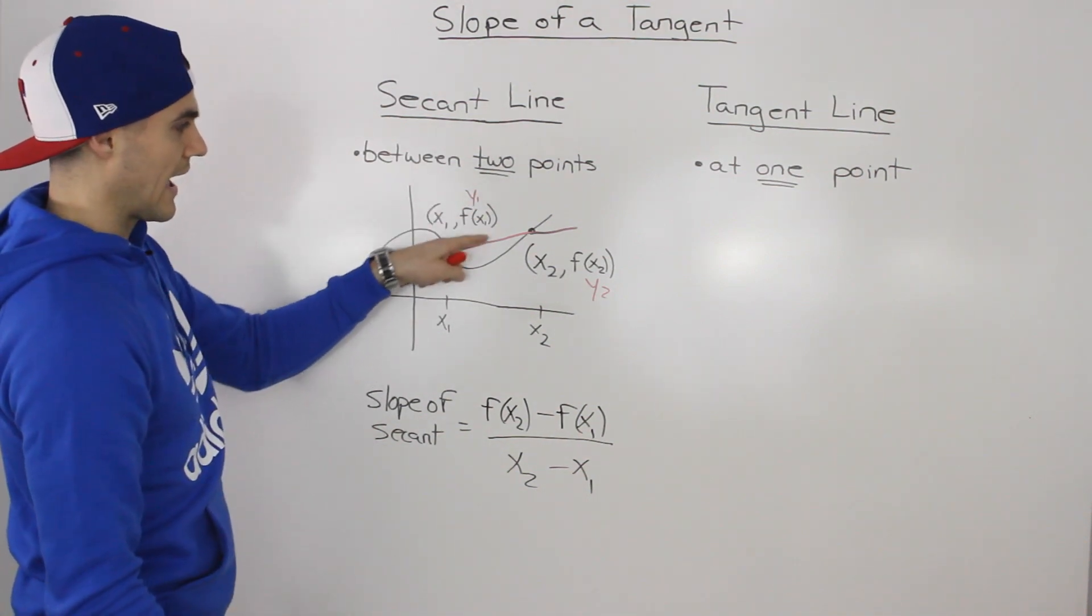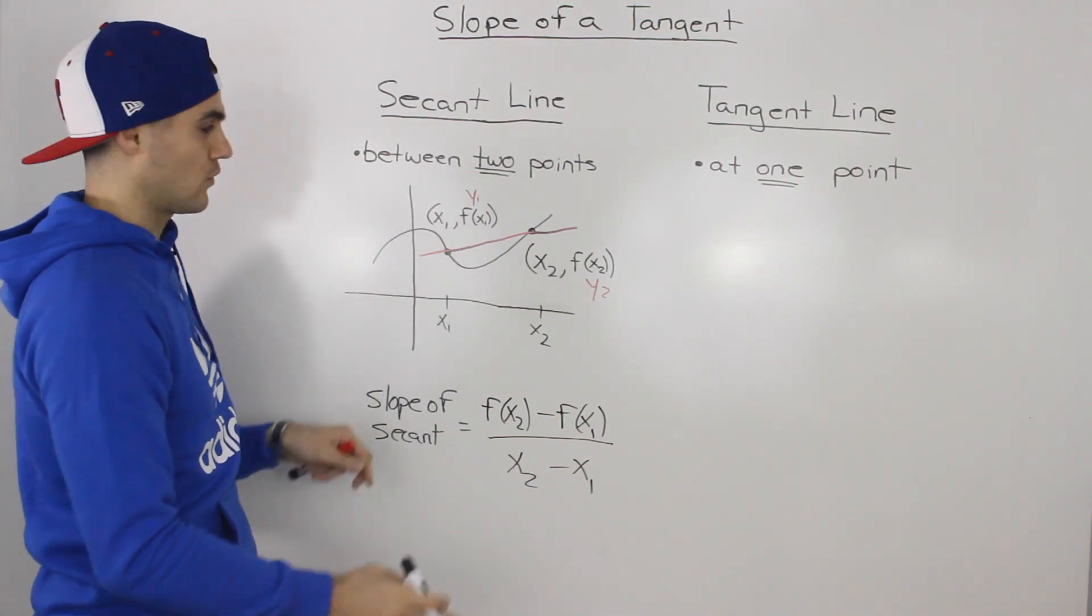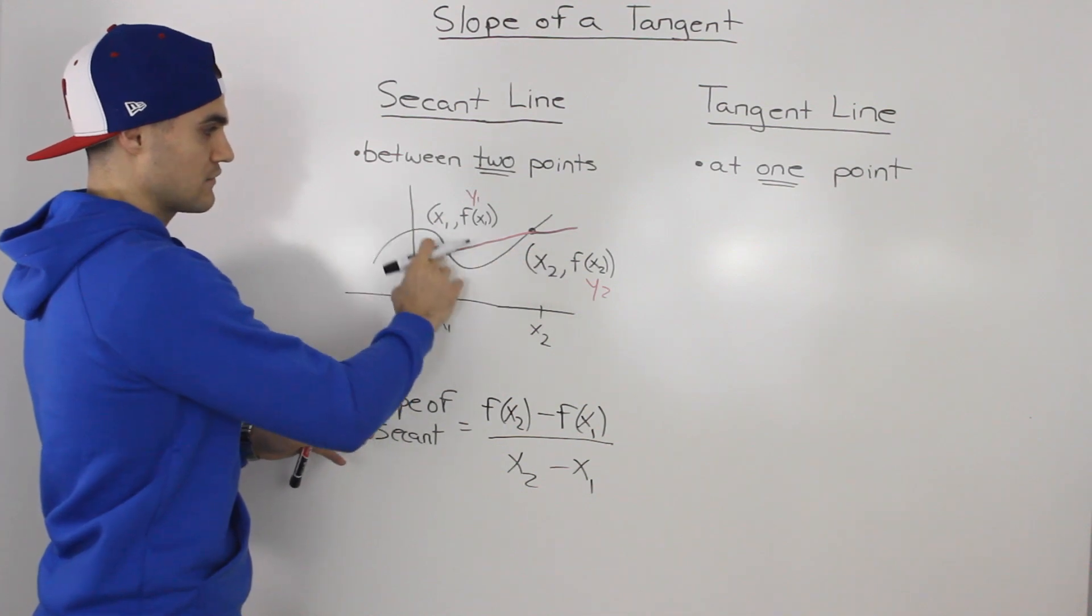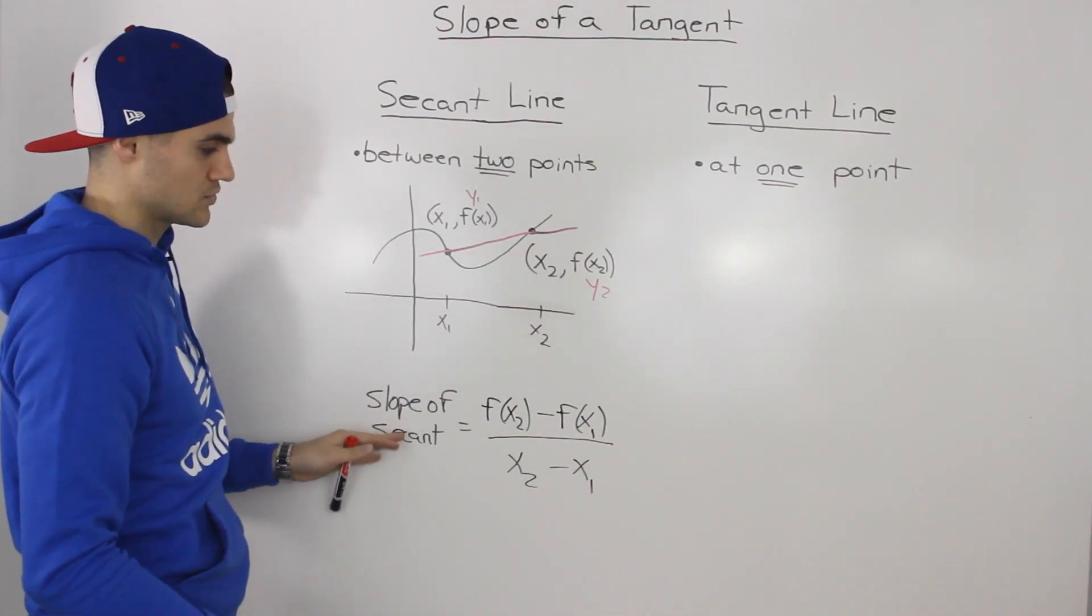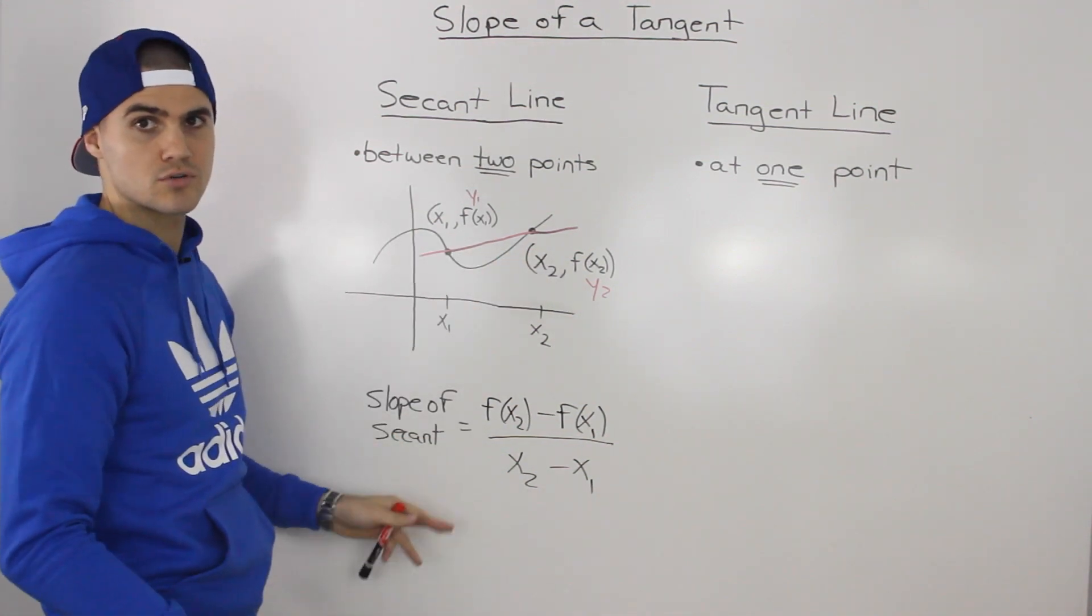So if we were given actual coordinates for both points on a function, then the slope of the secant would just be the slope between those two points. Pretty simple.